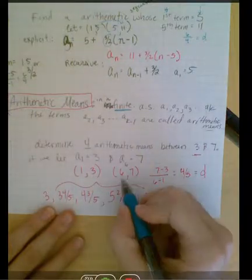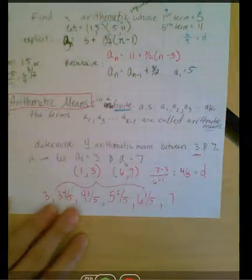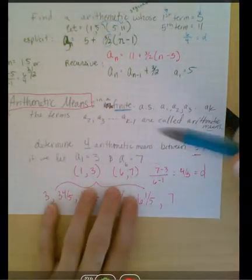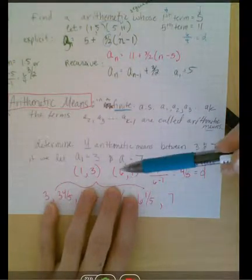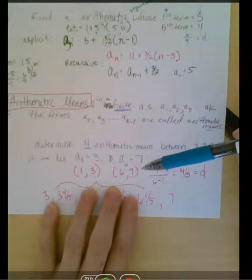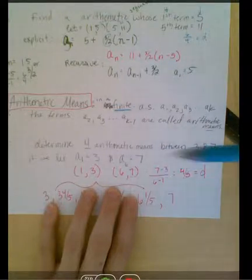So let's let 1, 3, and 6, 7 represent an x and a y, or an n and an a sub 1 and an a sub 6—I'm sorry, a 6 and an a sub 6,